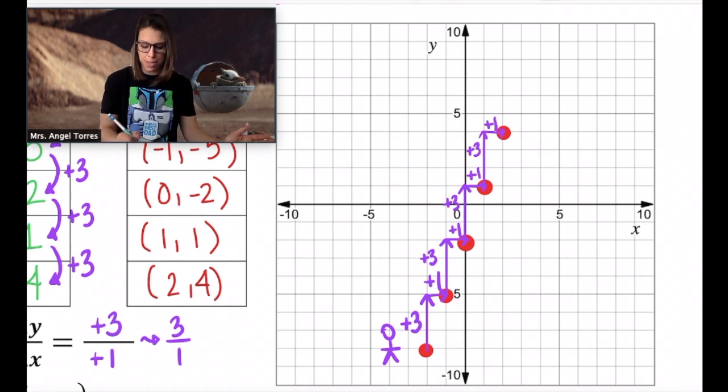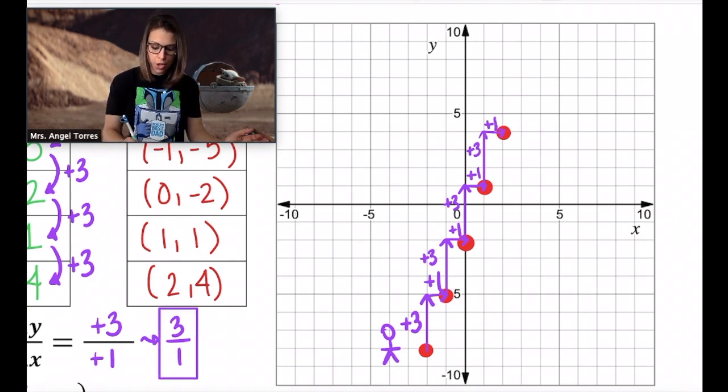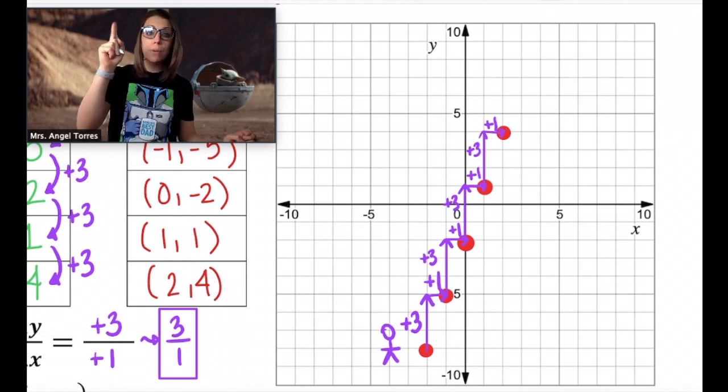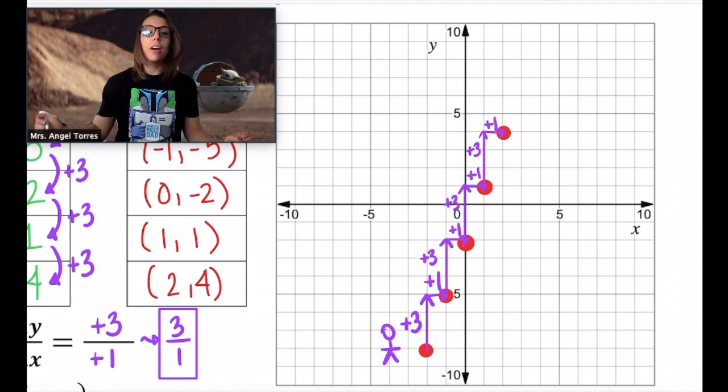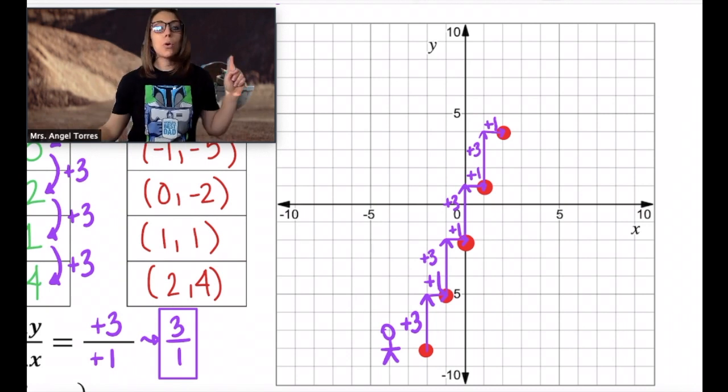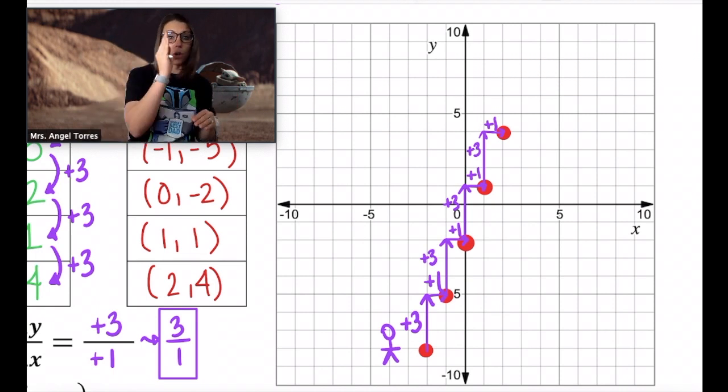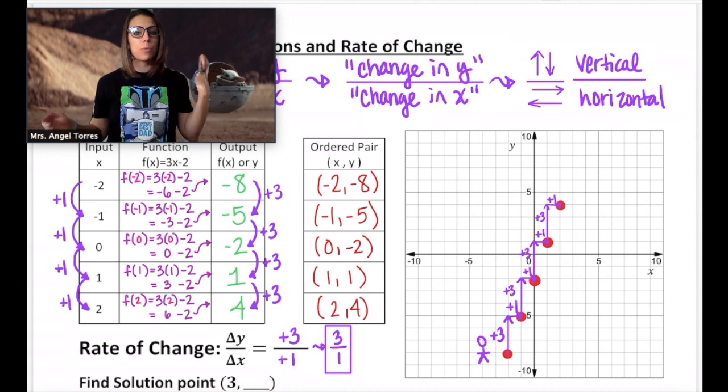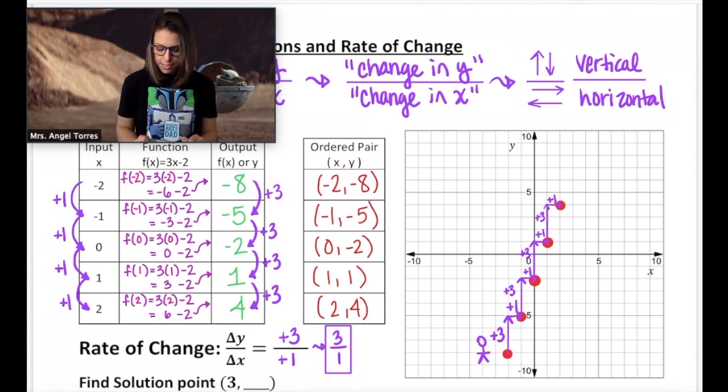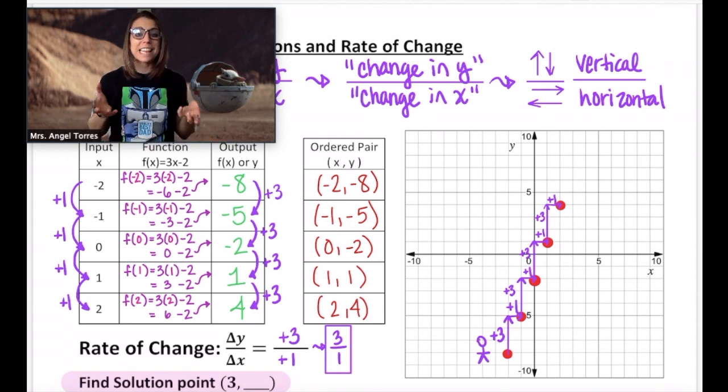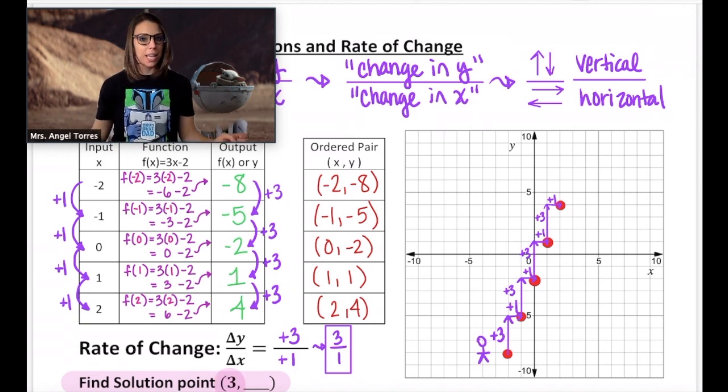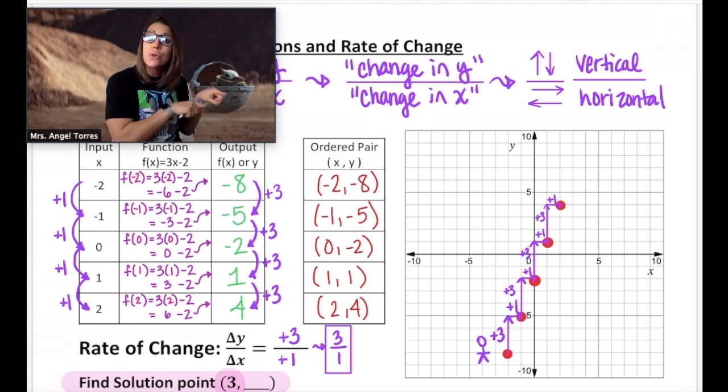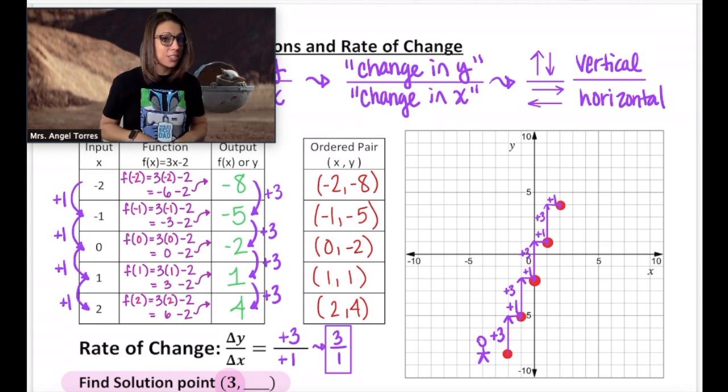We already know that the pattern for y is that we are increasing by 3 each time. That means we need to go up 3 units because our y-axis is vertical. And we know that our x change is +1, meaning we're going to go right 1 unit. So every time I go up 3 units, I have to go right 1 unit. Now, why is this important? Well, as we look at what's left here, we're asked to find a specific solution point. We're asked to find the output when we're given an input of 3. The old us would probably take the function and do all of this math. But the new us is actually going to use the graph and the rate of change.